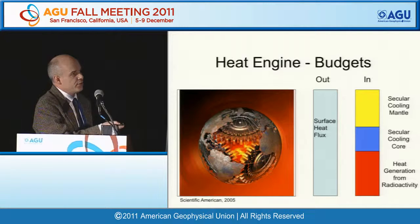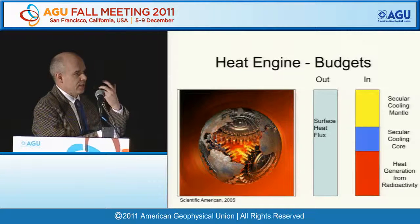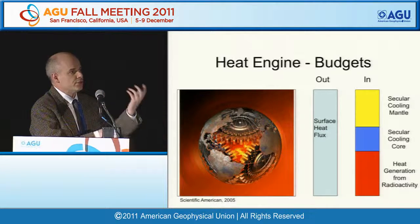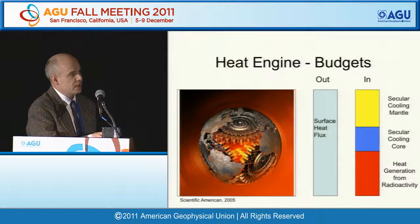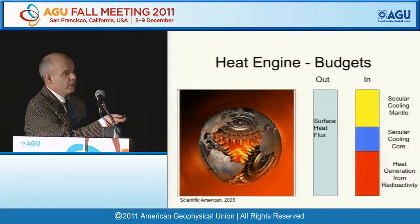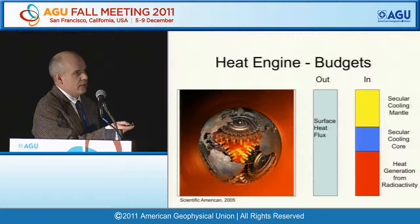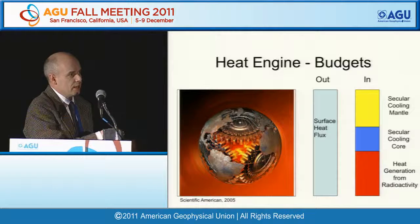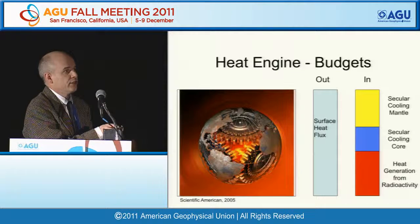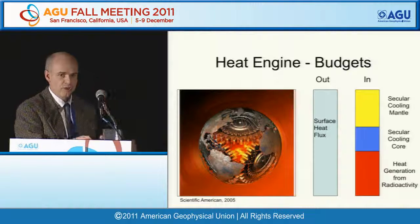Why would we be interested? The Earth is effectively a heat engine, and we want to understand the energy contributions so we can understand how it works. We look at heat generation from radioactivity and other components—secular cooling from the core and the mantle—all of which have quite large errors. We know the input has to equate with the output, and the surface heat flux can be useful in constraining at least the combination of these three.